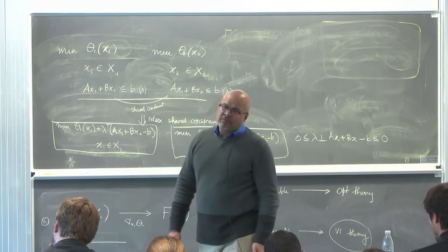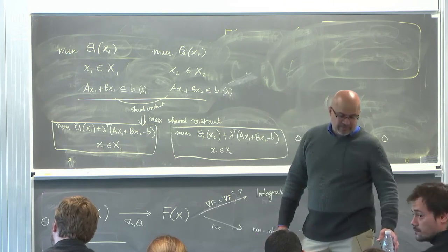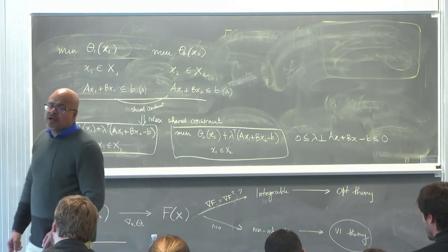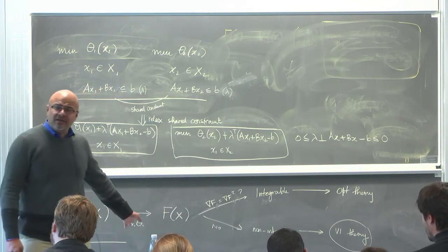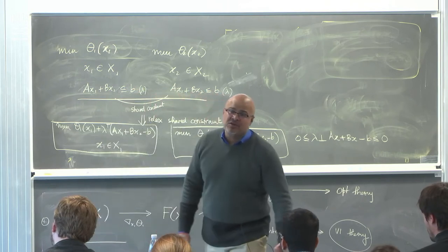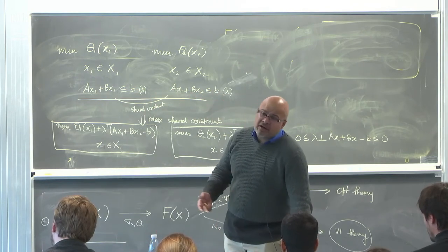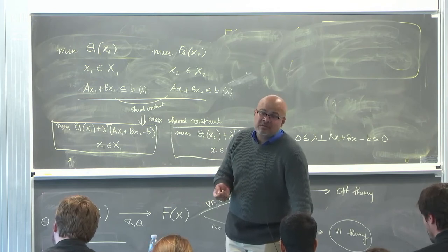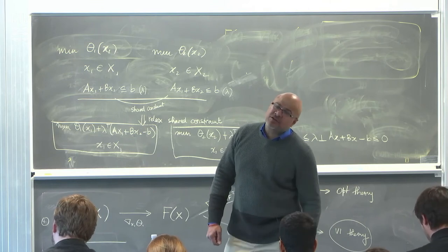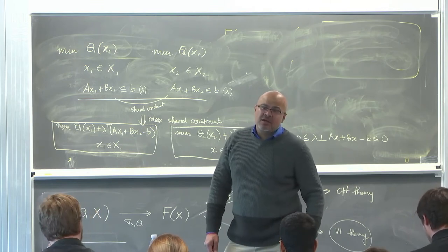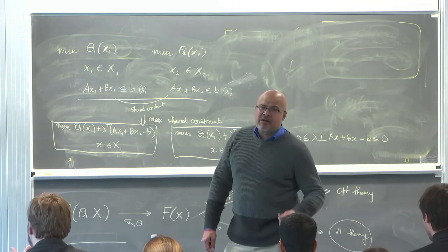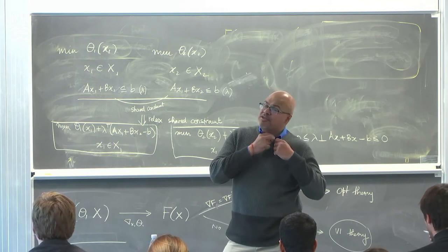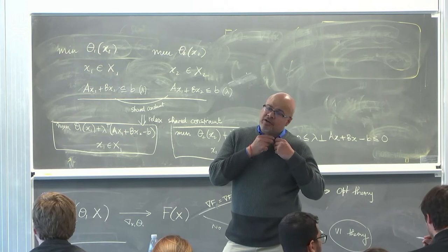It's pretty common that lambda1 equals lambda2. For instance, in uniform pricing auctions—particularly in electricity markets—lambda represents the price associated with the supply-demand constraint. When you run the market, there's a single price, so physically it's natural that price is used. From a game theory standpoint, one's conjecture of the price might differ, which is why people look at non-shared multipliers.